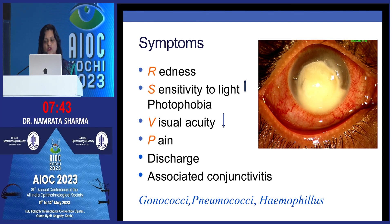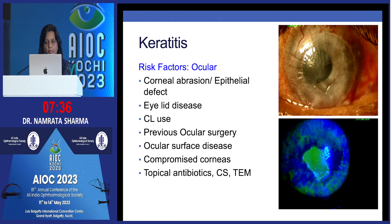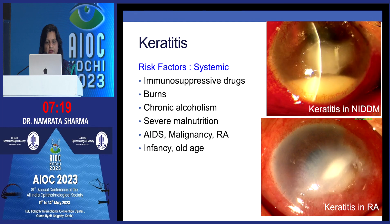Associated conjunctivitis, if present, could be because of gonococci, meningococci, or haemophilus. The risk factors could be ocular, such as corneal abrasion or epithelial defect, eyelid disease, contact lens use, previous ocular surgery, ocular surface disease, compromised corneas, and inadvertent use of topical antibiotics, steroids, and traditional eye medicine.